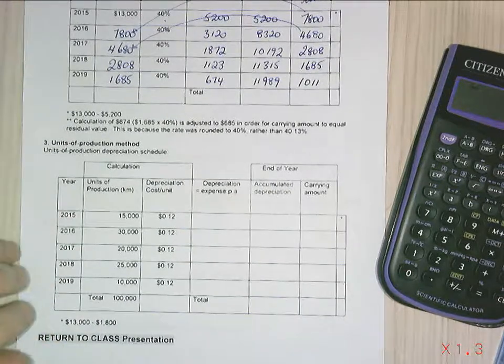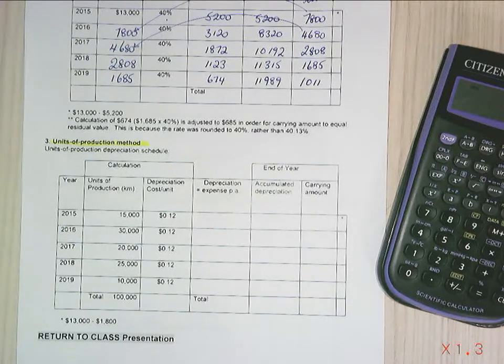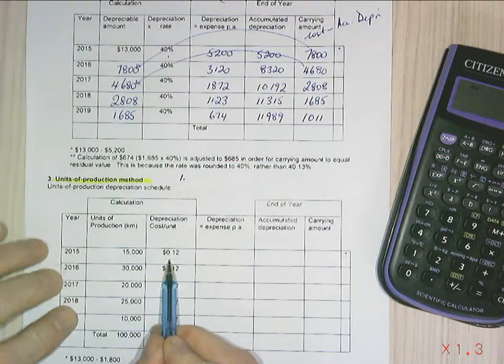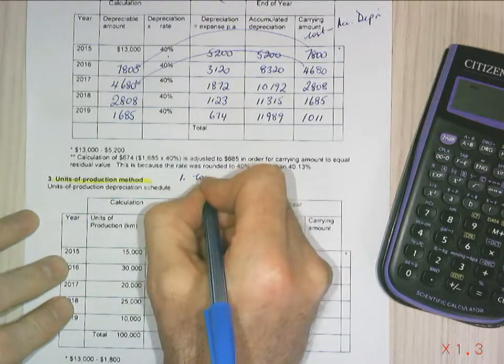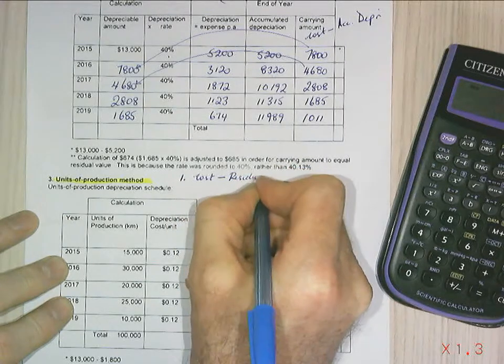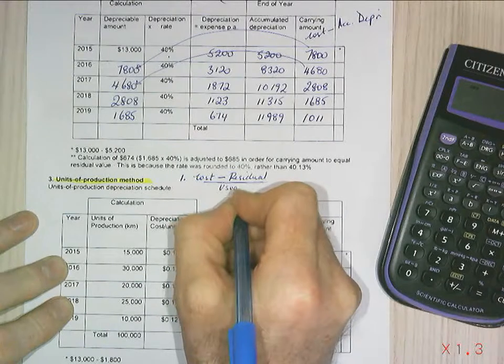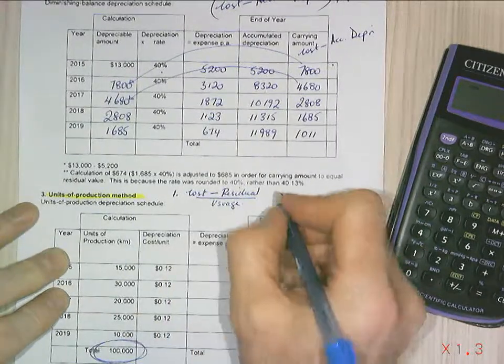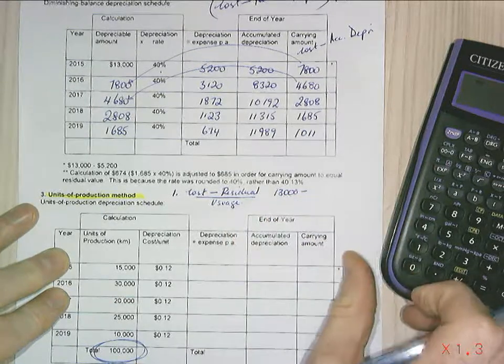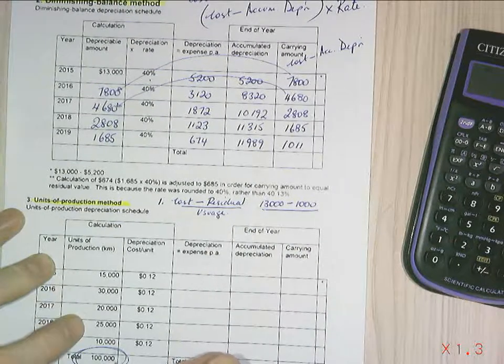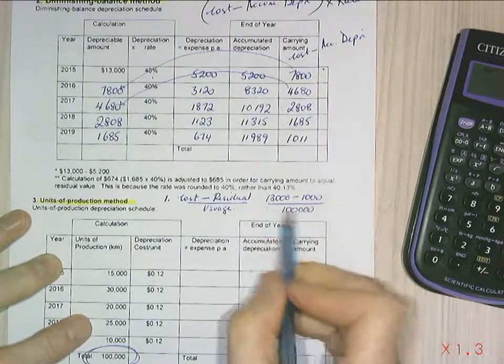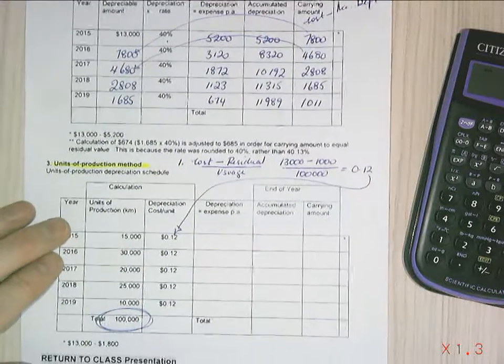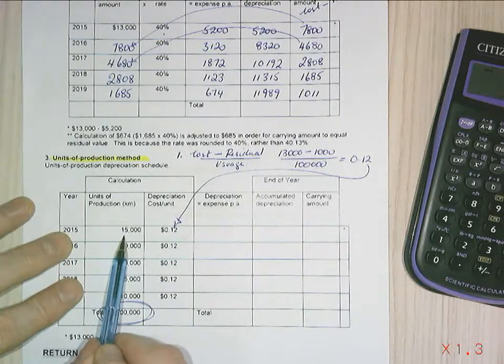All right, last method of depreciation. Units of production or units are sometimes used, is the other common way we talk about it. And the first thing we need to do here is we need to work out how do we calculate this rate. This rate is calculated by my cost minus my residual divided by the usage. We can work out what my usage is because it's down the bottom there. It's 100,000 units. The cost, we're still looking at the same cost of $13,000. My residual is still the same at being $1,000. And this time we're using 100,000 kilometres. So that's $12,000 divided by 100,000 equals $0.12, which is the rate we're talking about there.